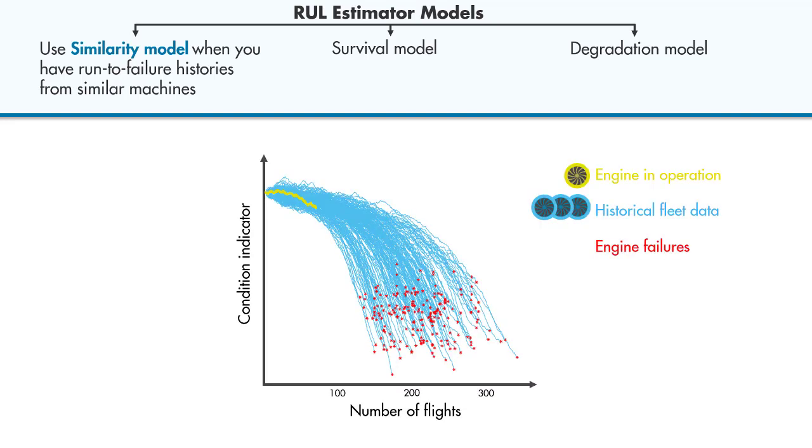These models are used when we have run-to-failure data. What this means is that we have the complete histories from a fleet with the same type of engine. This includes data from healthy state, degradation, and failure.